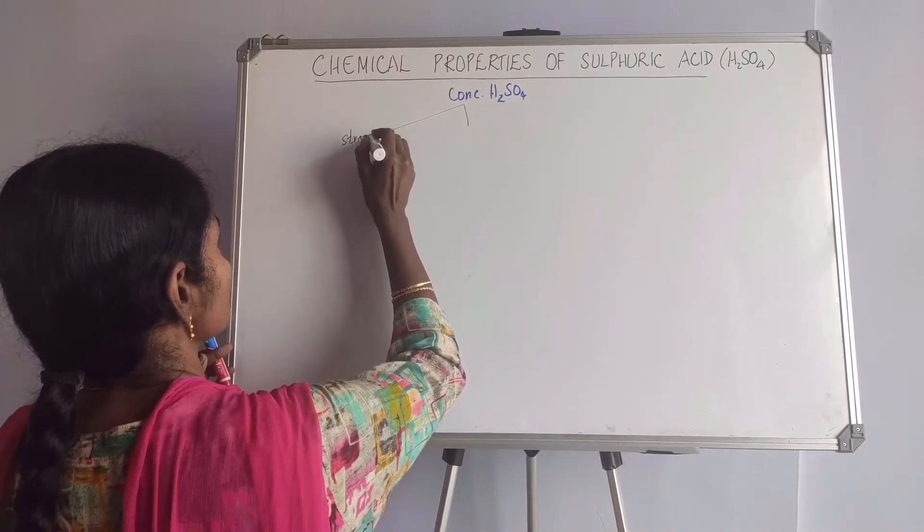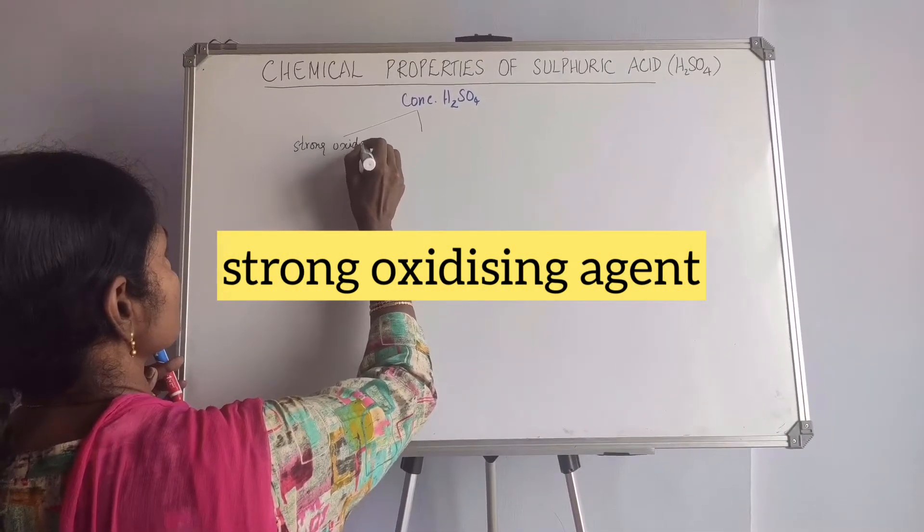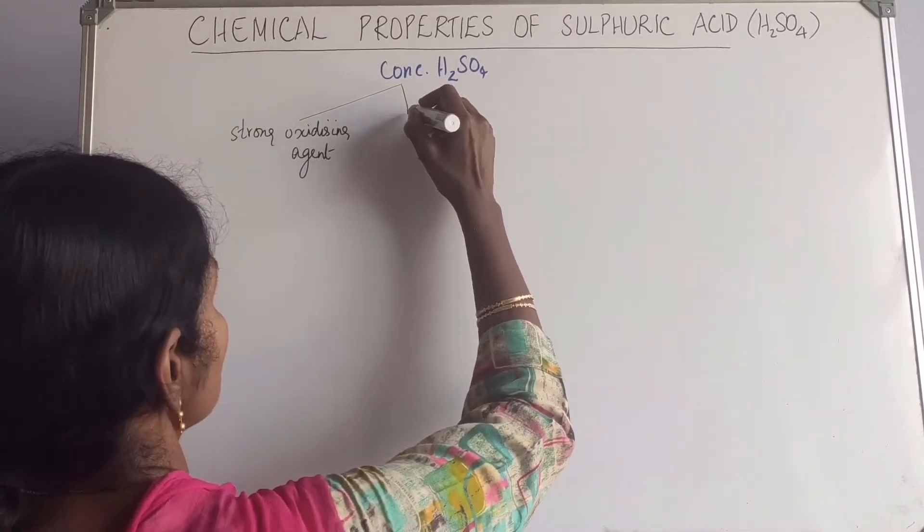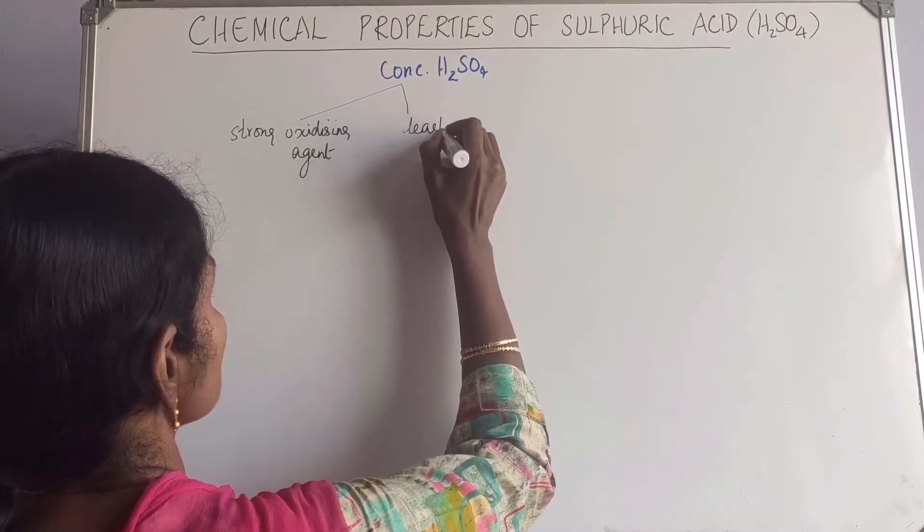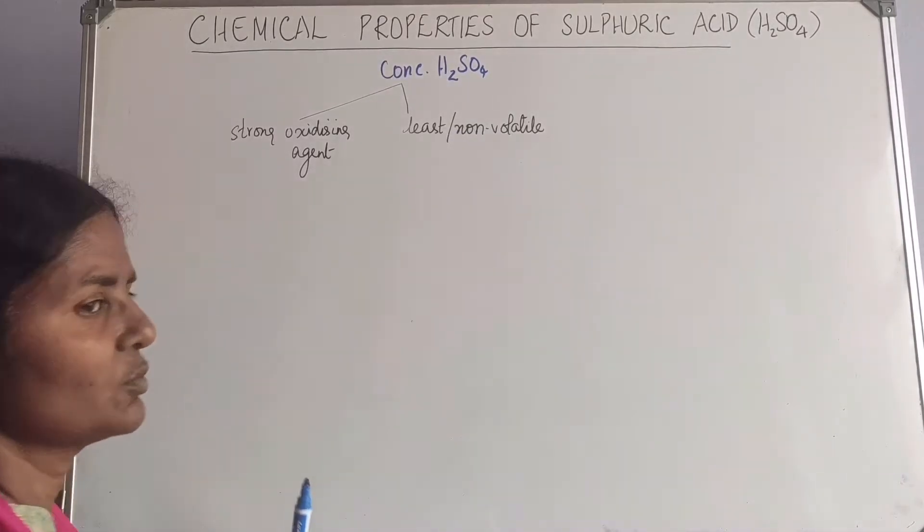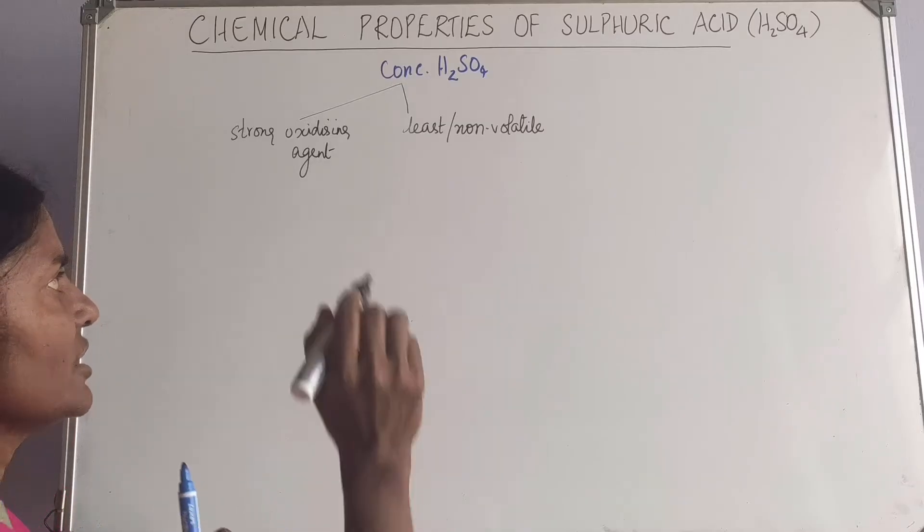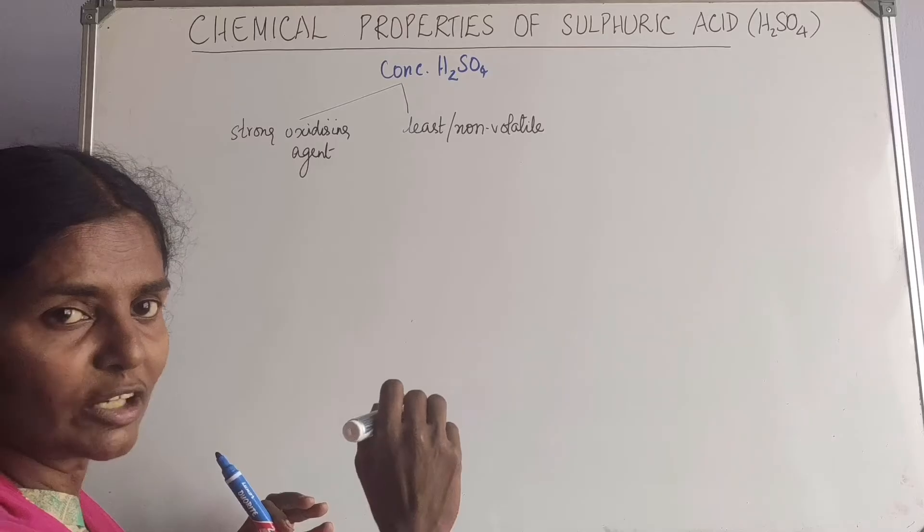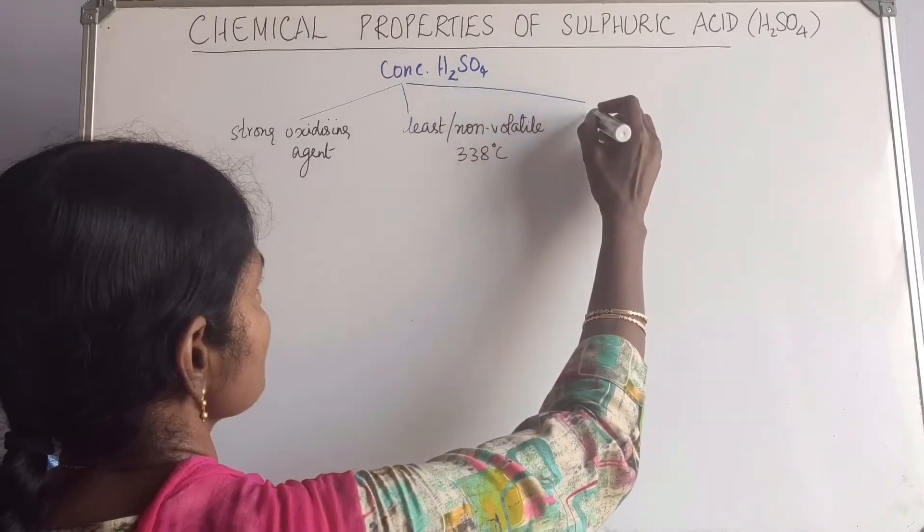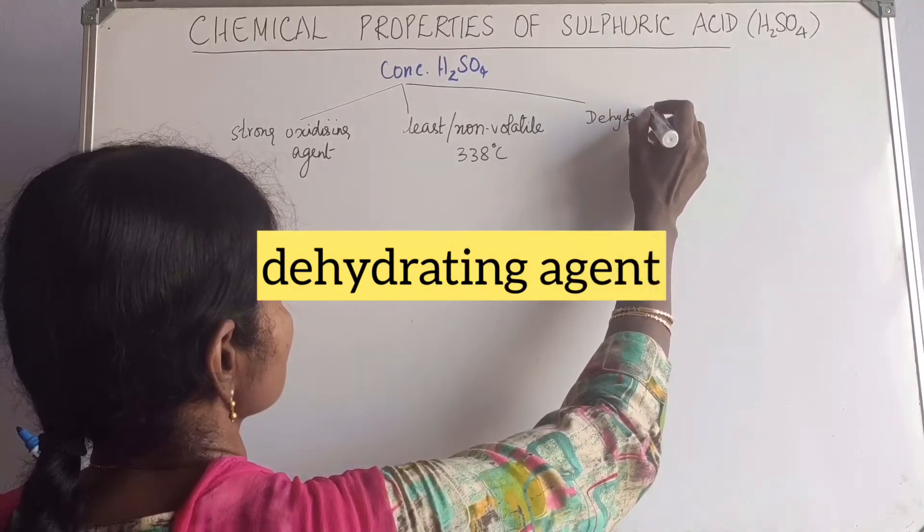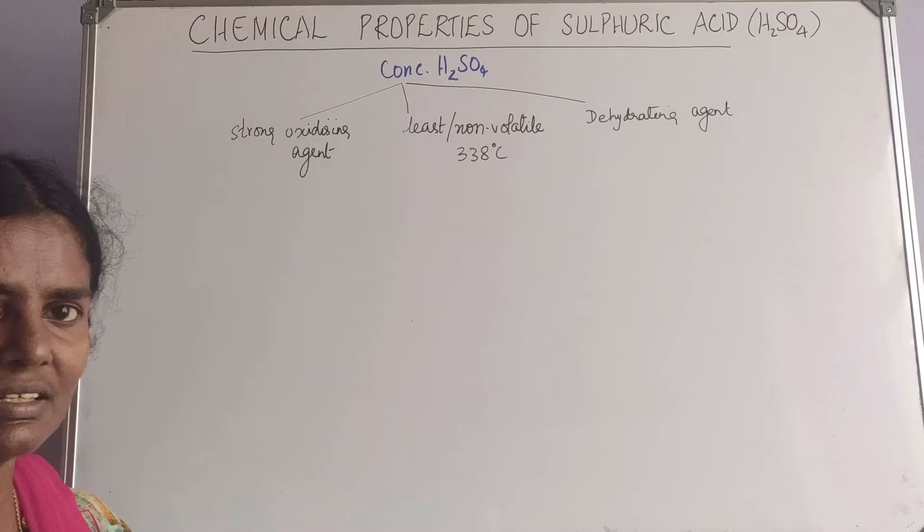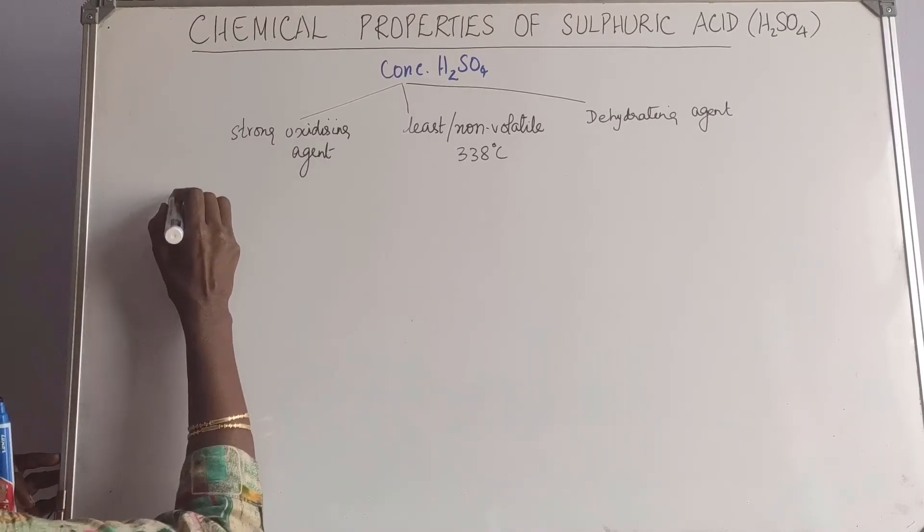In the previous video it was about dilute, now it is about concentrated. There are certain things we need to know about this. One is it is a strong oxidizing agent. The second one is it is the least or non-volatile acid because it has a very high boiling point of 338 degrees Celsius. Then the third one is it is a dehydrating agent which removes molecules of water from the structure of compounds.